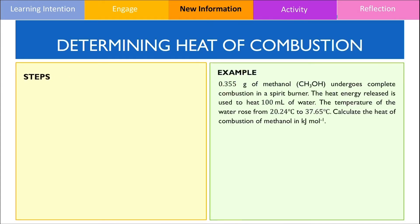In this example, 0.355g of methanol undergoes complete combustion and the heat energy released was used to heat 100ml of water. The temperature of water rose from 20.24 degrees to 37.65 degrees, and the question wants us to find out the heat of combustion of methanol in kJ per mole.